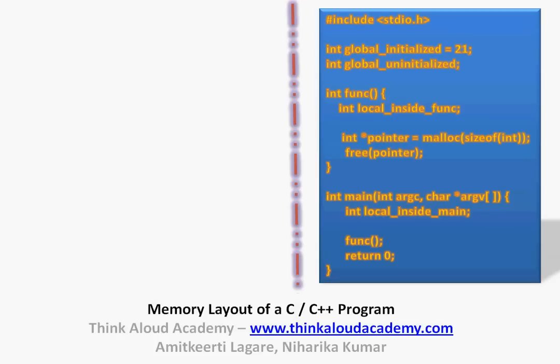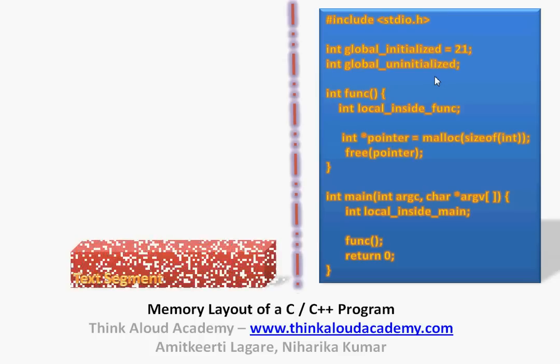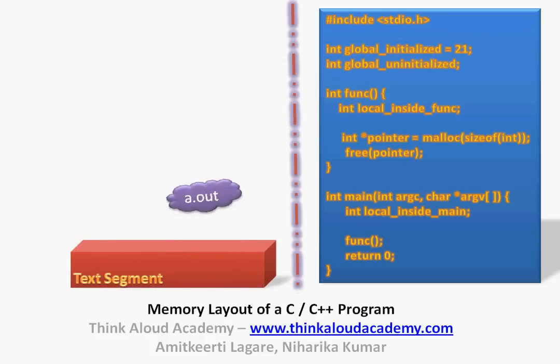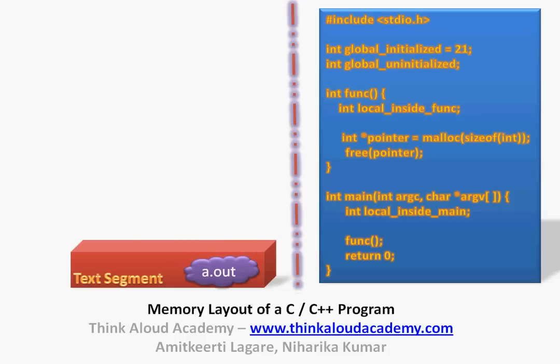When you compile this program and try to run it, you will generally create an a.out in a Linux environment, and when you do dot slash a.out, the program starts executing. When you compile this program, the first thing that happens is you create an a.out — that is your executable program. This a.out actually goes and sits in something called the text segment of the memory. In your process, you have one particular segment called the text segment, and your executable goes and sits there.